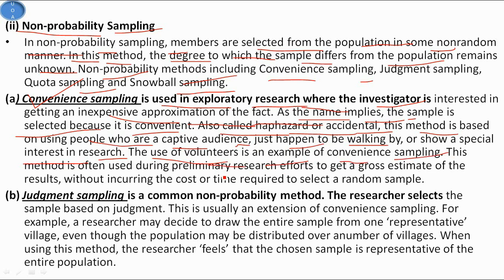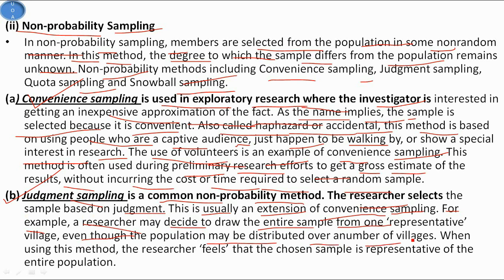Convenience sampling is often used during preliminary research to get a gross estimate of results without incurring the cost or time required to select a random sample. Judgment sampling is a common non-probability method where the researcher selects the sample based on judgment. For example, a researcher may decide to draw the entire sample from one representative village even though the population may be distributed over a number of villages. When using this method, the researcher feels the chosen sample is representative of the entire population.